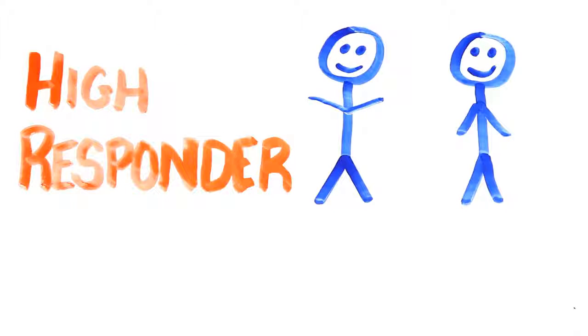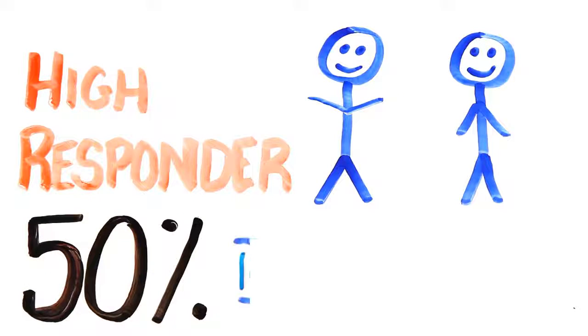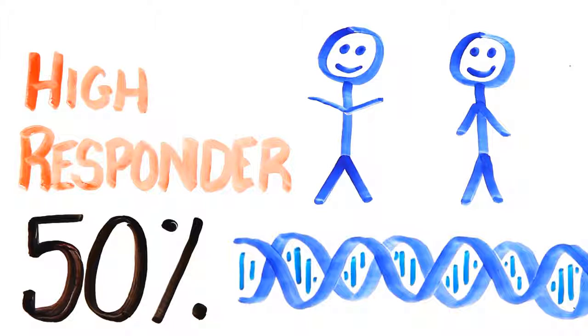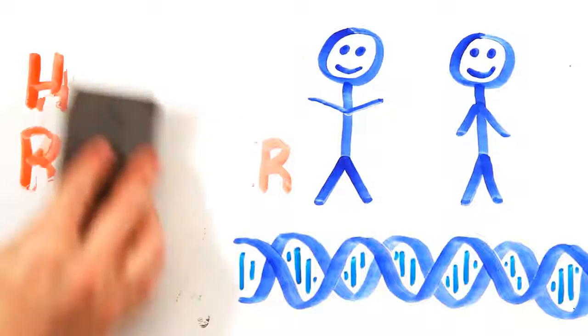These individuals are considered high responders to training. After statistical analysis of endurance, it was determined that 50% of athletic improvement was linked to genetics. In other words, great athletes are born with great genes.